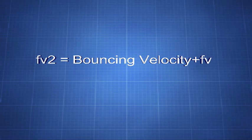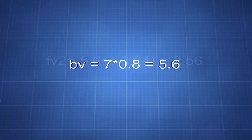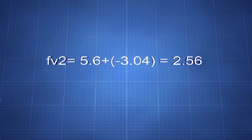For our last example the total bouncing velocity is 7 times 0.8 that equals 5.6, and the final velocity of m2 is then 5.6 plus minus 3.04 equals 2.56.